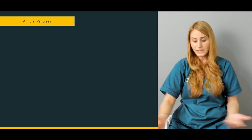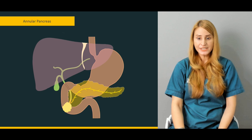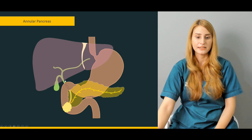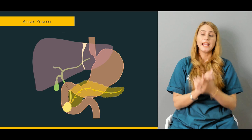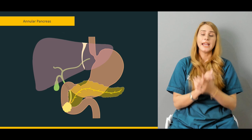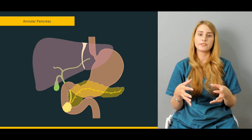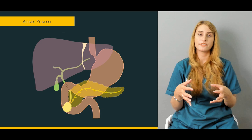Annular pancreas is another congenital anomaly. Instead of the main pancreatic duct opening into the major duodenal papilla, there is a problem with the dorsal pancreatic duct causing the main duct to enter the minor duodenal papilla. This annular pancreas compresses the ampulla of Vater and is more common in patients with Down syndrome.